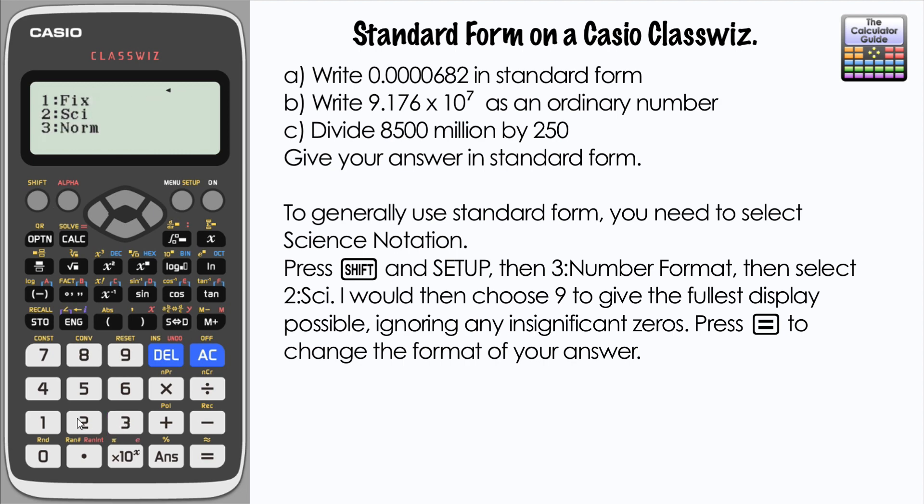So shift, setup, 3 for number format, and then 2 for science notation. Now this bit I always find a little bit tricky. We've got to select from 0 to 9, and this is the number of decimal places that it will display on a scientific notation number.